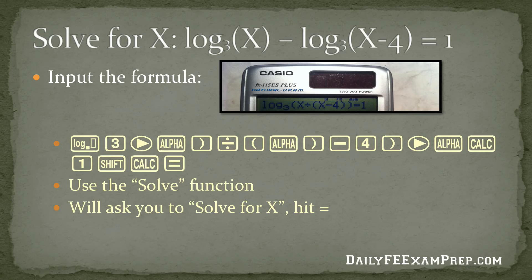So then we hit the right button, hit alpha, calc, 1, then hit shift, calc, and equals. That shift, calc button is our solve function. So we want to use a solve function because we want to be solving for an unknown variable. So that's what's going to tell our calculator that we want to solve for x.